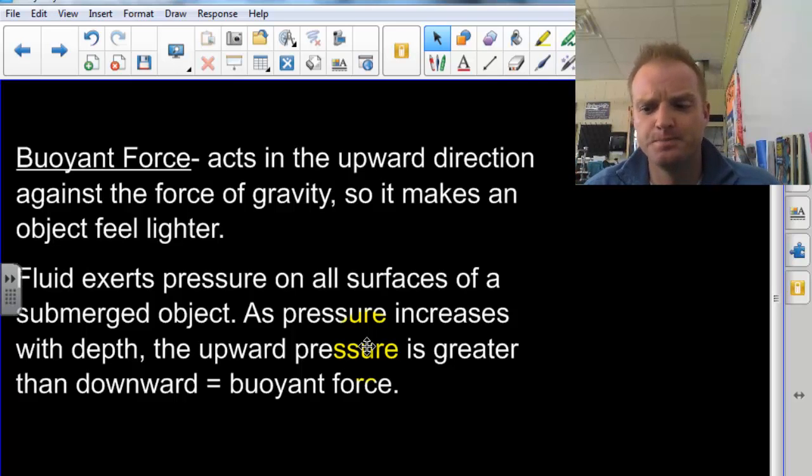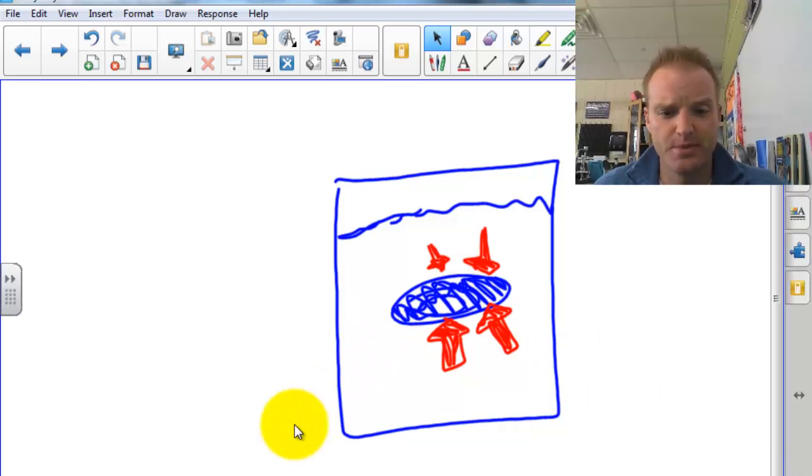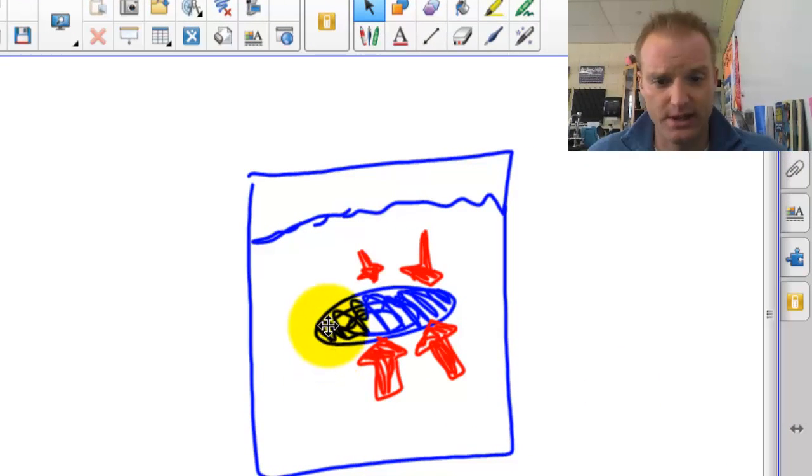Now, with that being said, wouldn't all things float if they're in water? Because they all have a buoyant force. And this is true, but we're going to explain why that wouldn't necessarily be true all the time. But first, here's my nice picture. Let's have this blue egg submerged in the water. My arrows kind of represent the amount of buoyant force. You can see the top of the egg is not as deep in the water as the bottom.